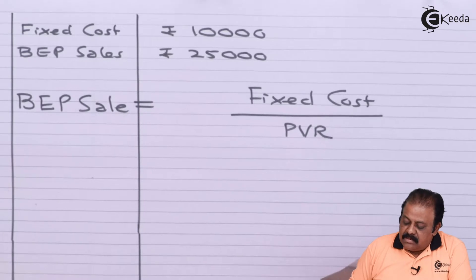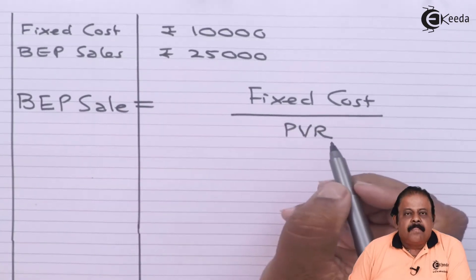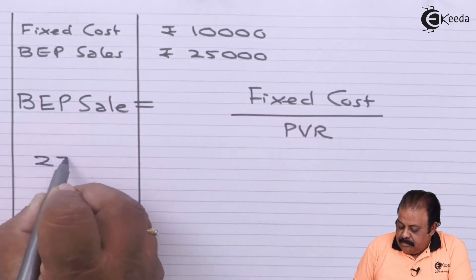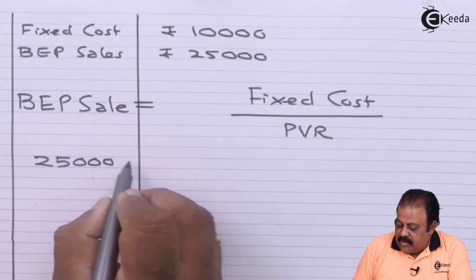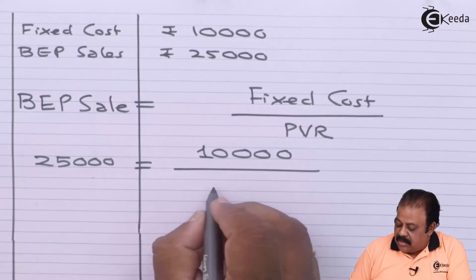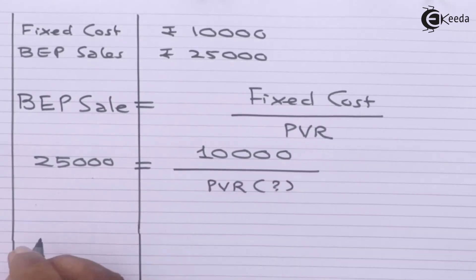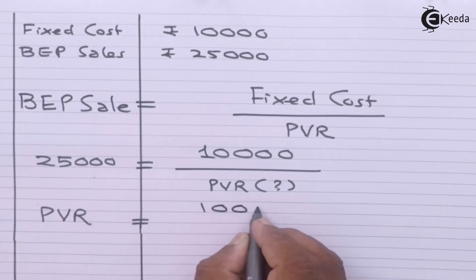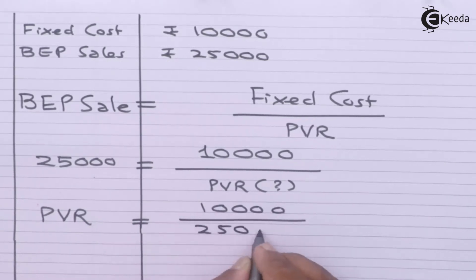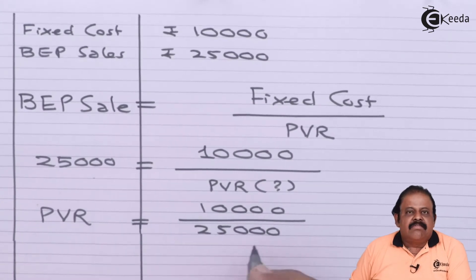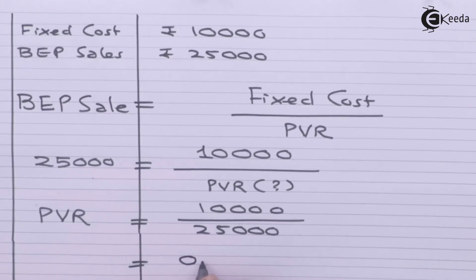Now here we have both the variables — we have fixed cost 10,000 and breakeven point rupees 25,000. By using this data, breakeven point sales is 25,000 and fixed cost is 10,000, we can find out the amount of PVR. By replacing the values, PVR will be 10,000 divided by 25,000, so we get PVR = 0.4, that is 40 percent.